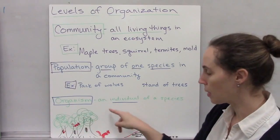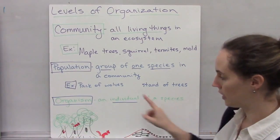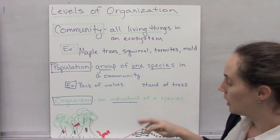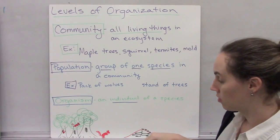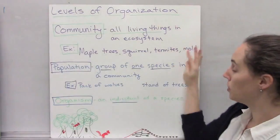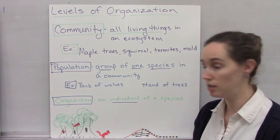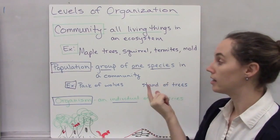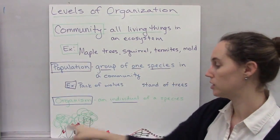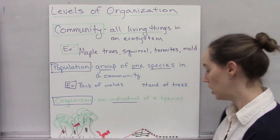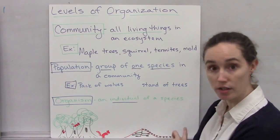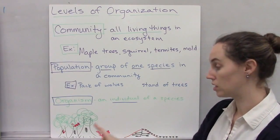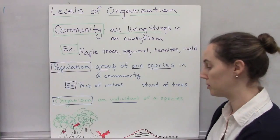So here my ecosystem includes trees, squirrels, soil, and termites. The community would not include the soil — it would just be trees, squirrels, and termites. A population might be this group of three squirrels or this colony of termites. And one organism would be just this one tree or just this one squirrel.